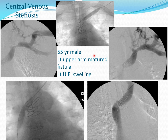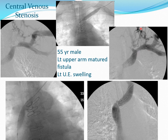Coming to central venous stenosis — this is an example of left subclavian venous stenosis in a 55-year-old male with a left upper arm matured fistula presenting with left upper extremity swelling. The angiogram shows the cephalic arch, axillary vein, stenosis of the subclavian vein with multiple large collaterals. After angioplasty you expect collateral vessels to decrease, but in this patient collaterals are still filling, and further examination reveals a second stenosis of the brachiocephalic vein, which can be treated with angioplasty using another balloon.